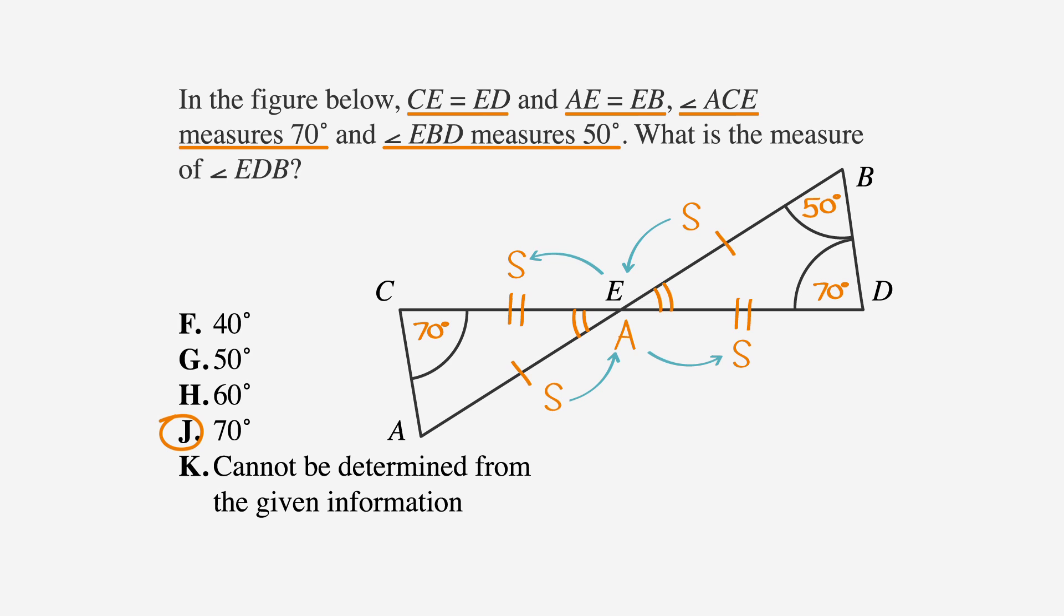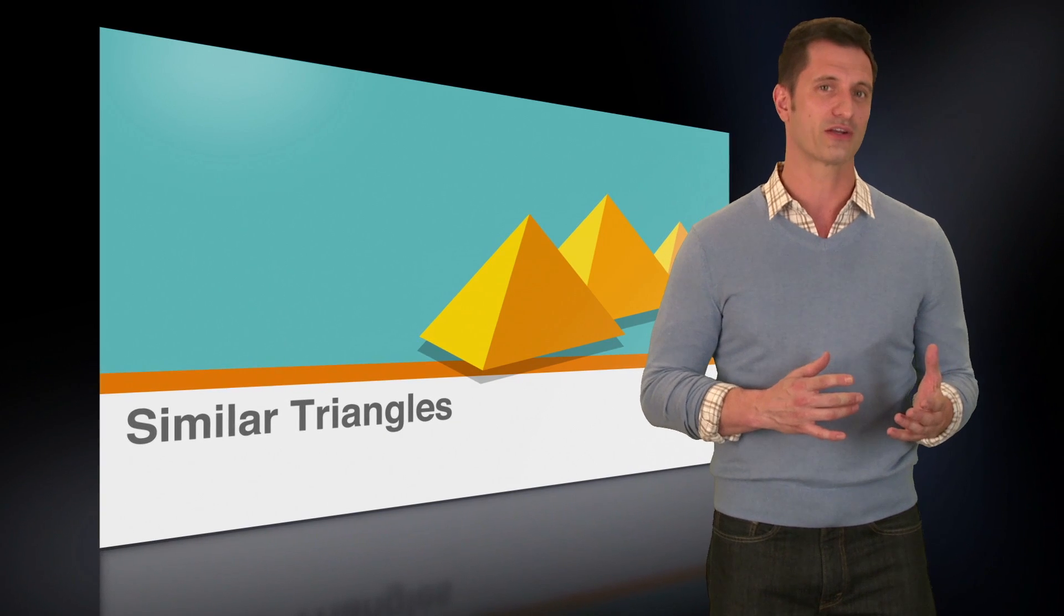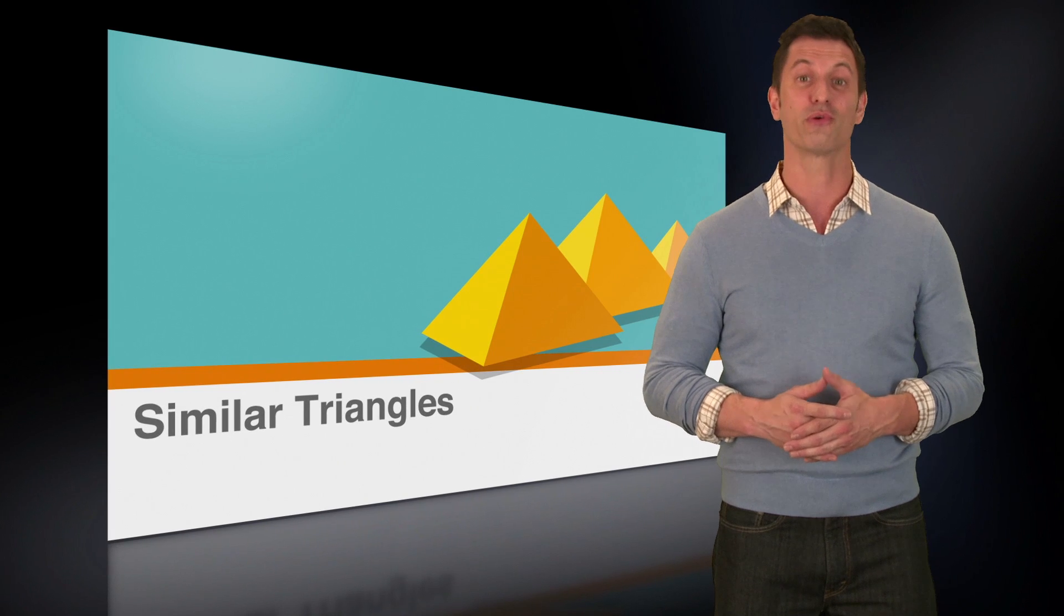Similar and congruent. Two great words that don't mean the same thing. Now that you know the difference and how to classify similar triangles and congruent triangles, you're one step closer to having your score on the ACT be congruent with your goal.